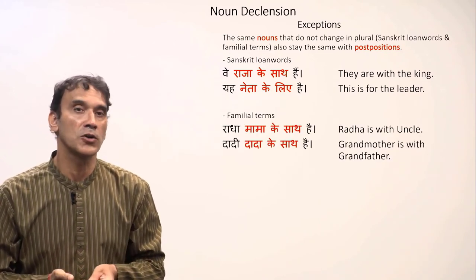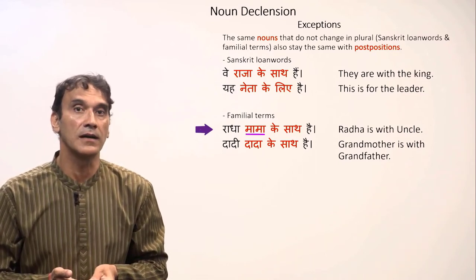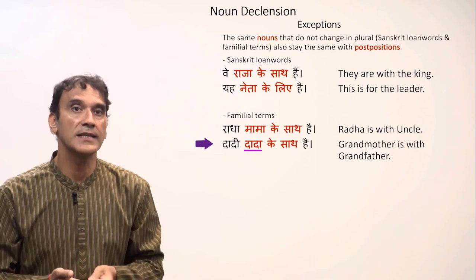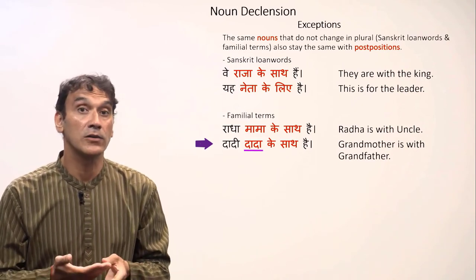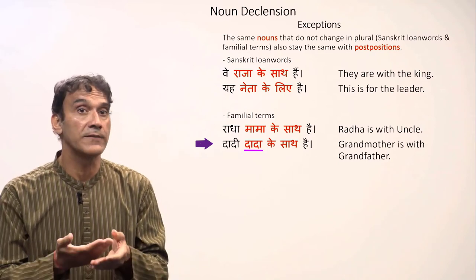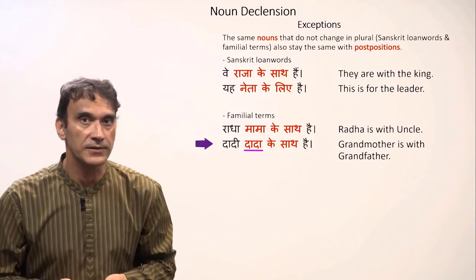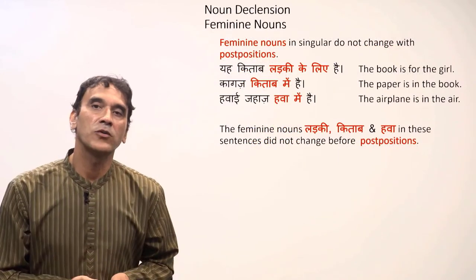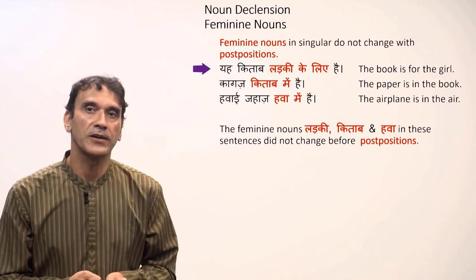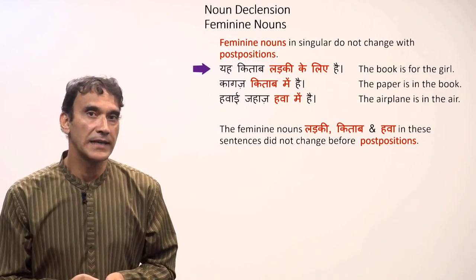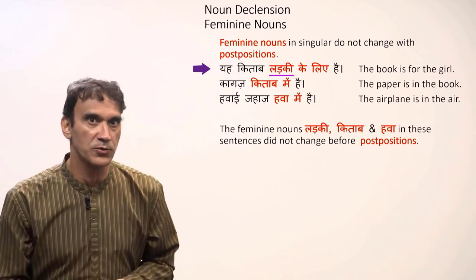Finally, familial terms ending in 'a' also do not change. 'Radha mama ke saath hai' — Radha is with the uncle; 'mama' does not change to 'mame.' 'Daadi dada ke saath hai' — grandmother is with grandfather; 'dada' stays the same as 'dada ke saath,' not 'dade.' Feminine nouns in singular also do not change with postpositions. 'Yeh kitab ladki ke liye hai' — the book is for the girl; 'ladki' stays 'ladki.'